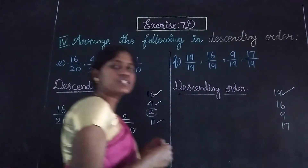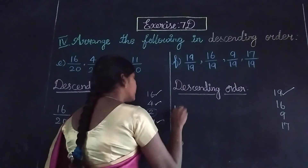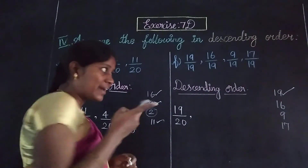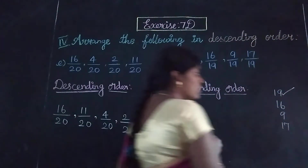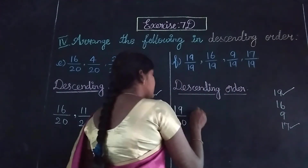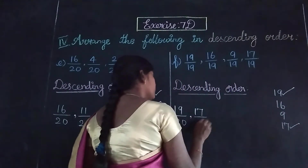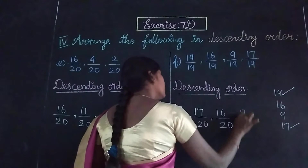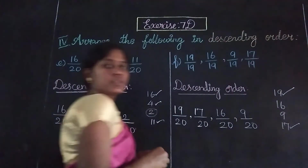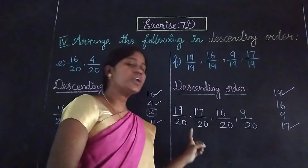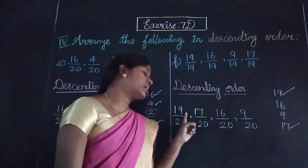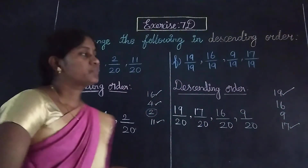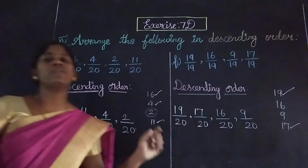So the first fraction is 19 by 19. What do you think comes next — 16 or 17? 17. So 17 by 19. Then 16 by 19. The last one is 9 by 19. So the second descending order is: 19 by 19, 17 by 19, 16 by 19, 9 by 19.